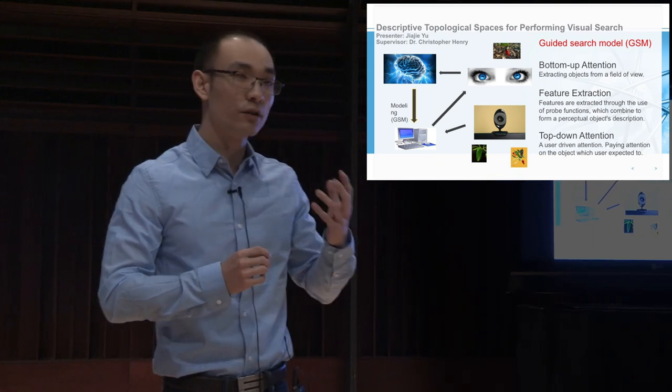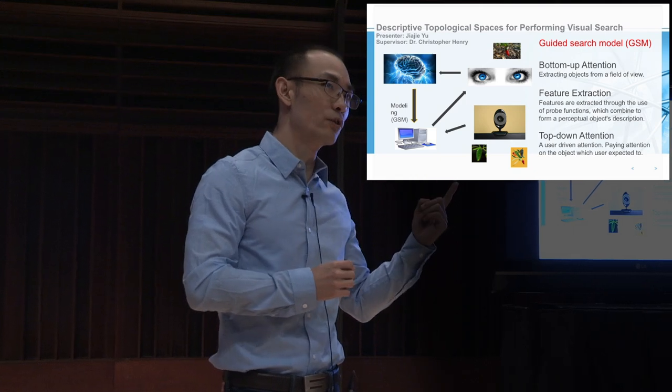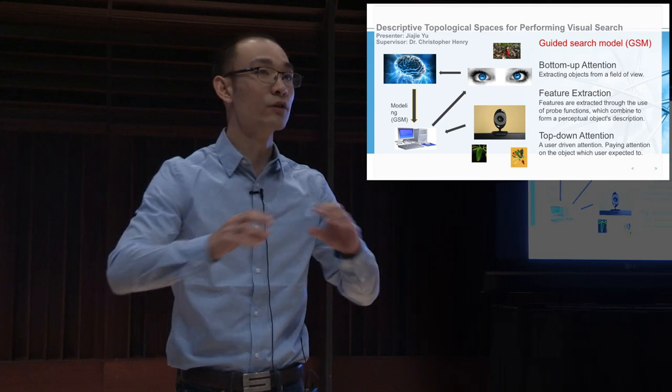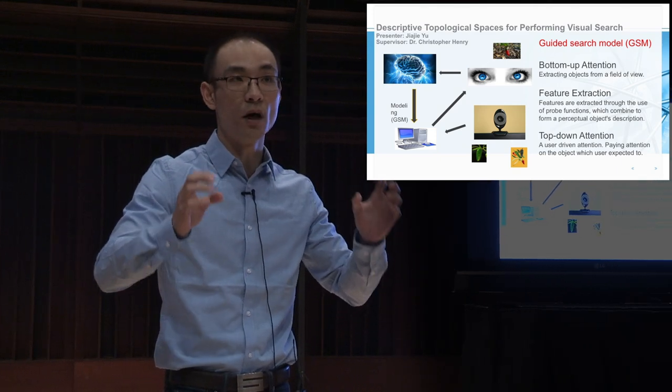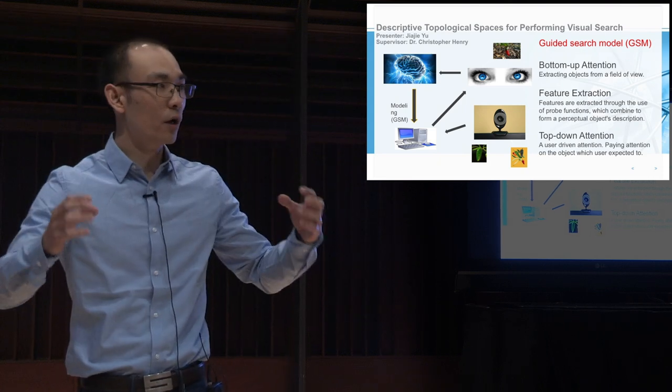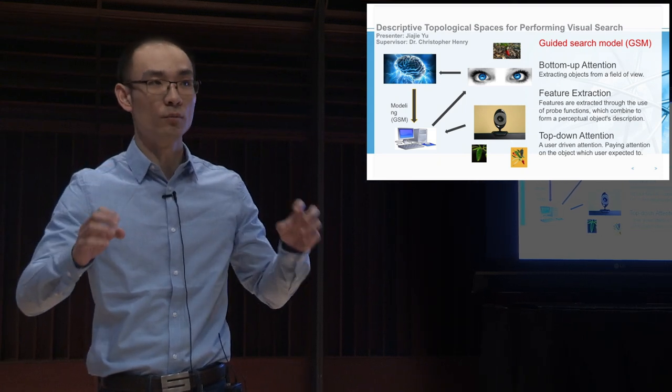This model consists of three steps. First, bottom-up attention, which is actually extracting an object from the field of view. There's no comparison, just extracting an object from the background. The second step is extracting features from each object.